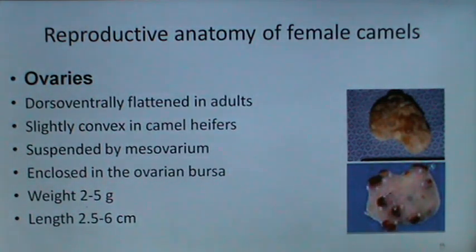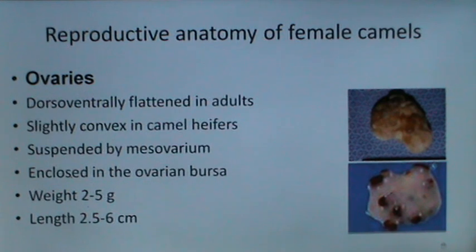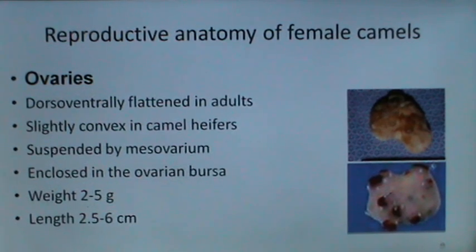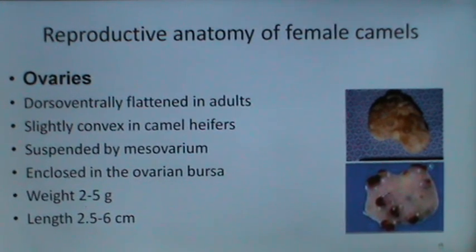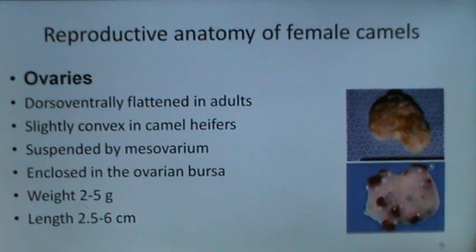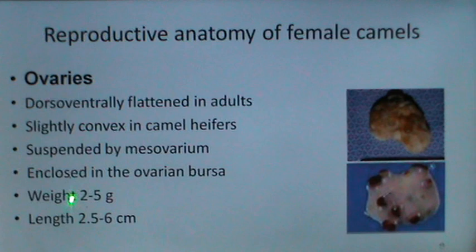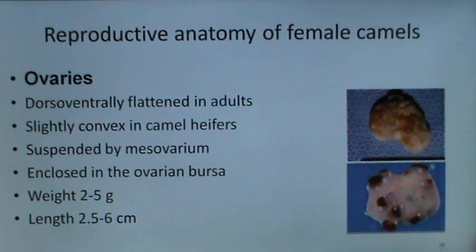When we discuss the reproductive anatomy of female camels, the ovaries are dorso-ventrally flattened and slightly convex in camel heifers. They are suspended by the mesovarium and enclosed in the ovarian bursa. They weigh from 2 to 5 grams and their length is from 2.5 to 6 cm.